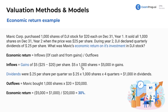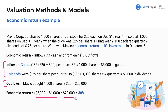Five dollars times 1,000 shares is $5,000 in gains. For dividends: $0.25 per share times 1,000 shares times four quarters gives us $1,000 in dividends. Those are our total inflows. Mavic bought 1,000 shares for $20 each — that's our total outflows. The economic return comes out to 30%.